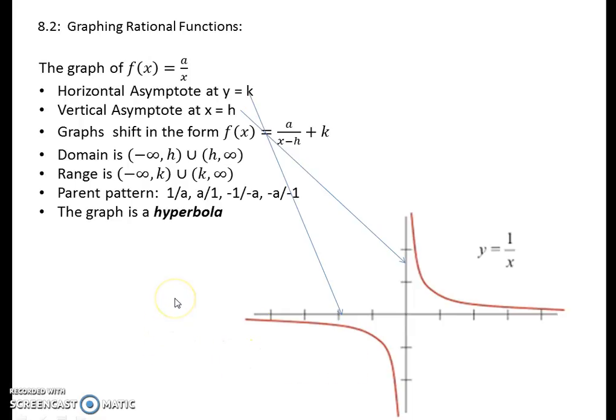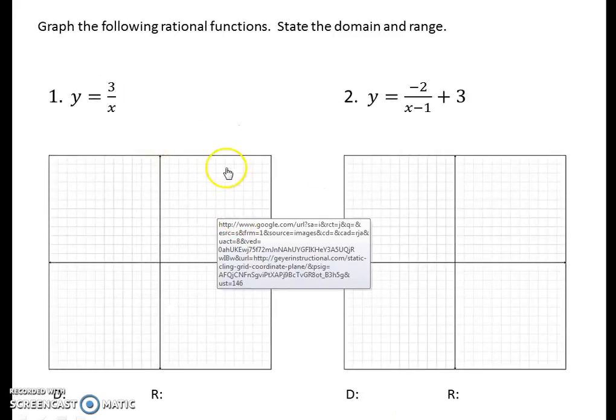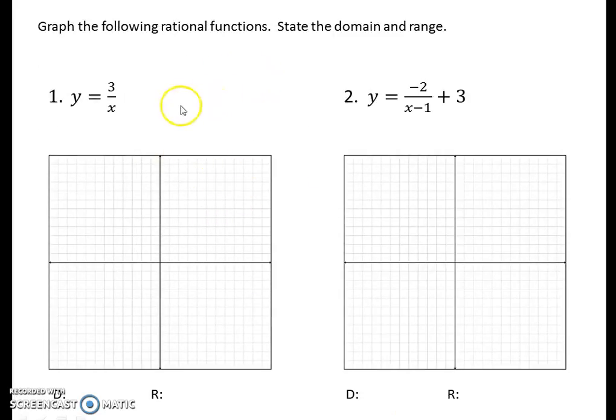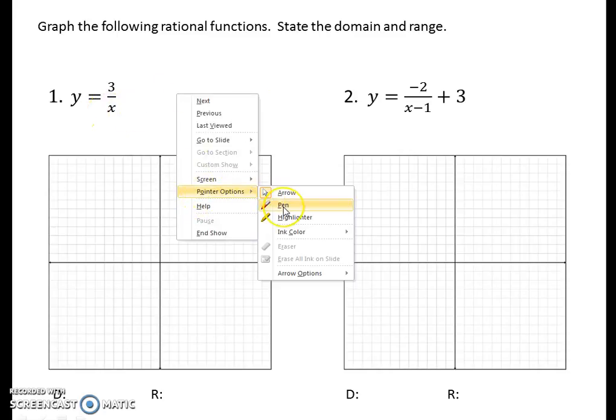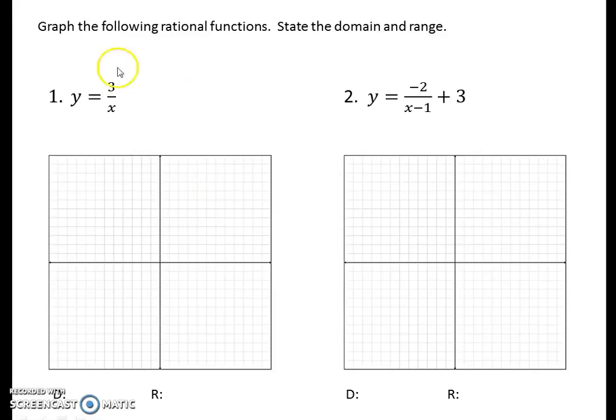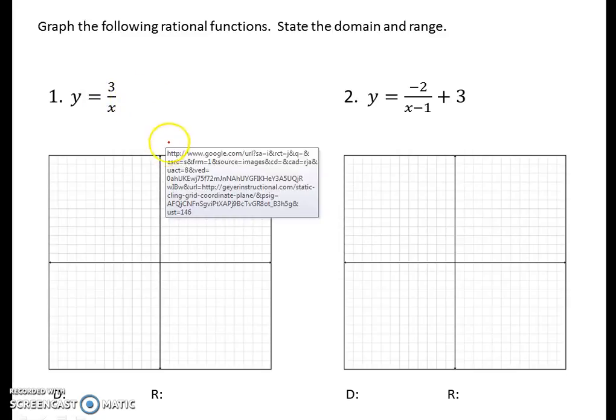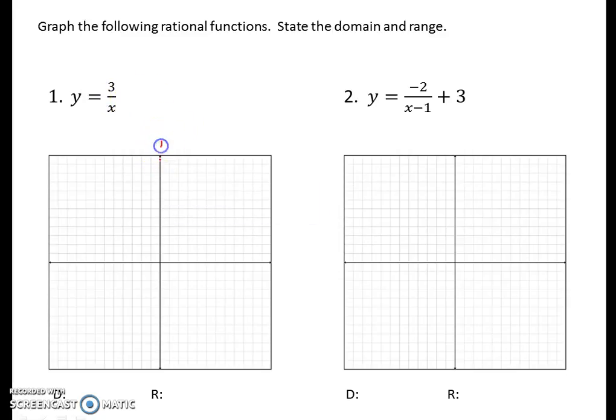Let's take a look at a couple of graphs and show you how to graph simple rational functions where one will include an h and k shift. Our first example is 3 over x equals y. As we take a look here, we don't have any h or k shifts. If we had a horizontal shift, we'd see it next to x, and if there was a vertical shift, we'd see it after the fraction.